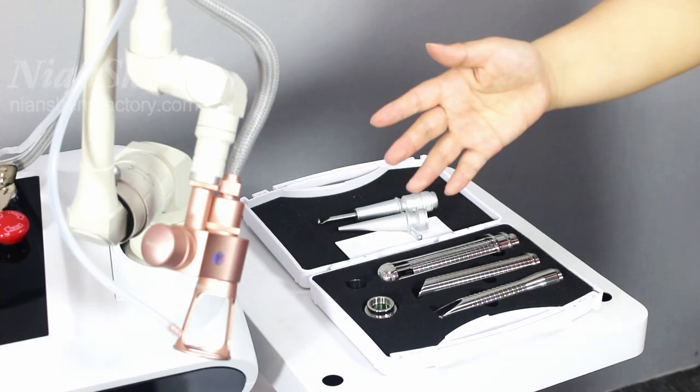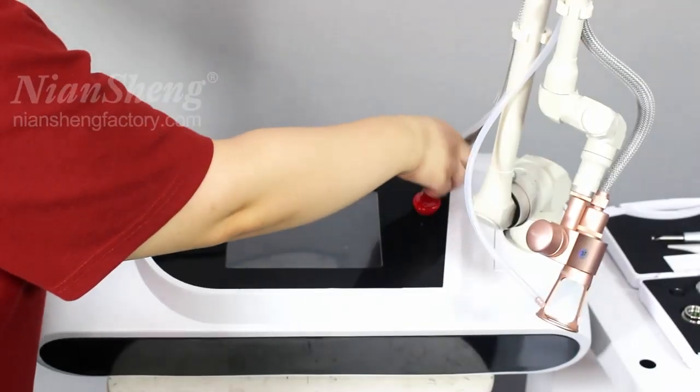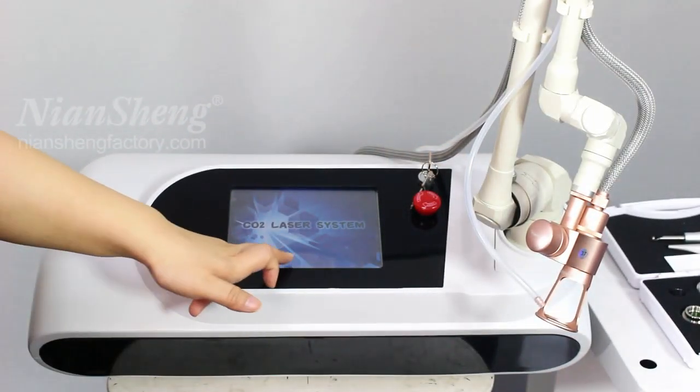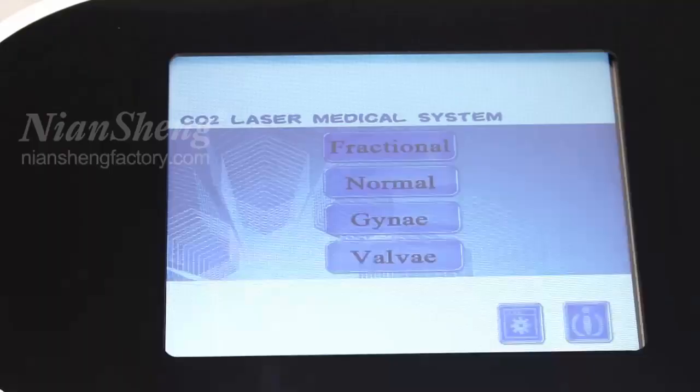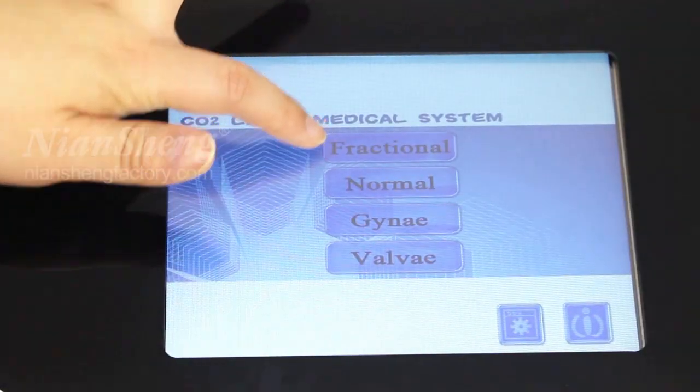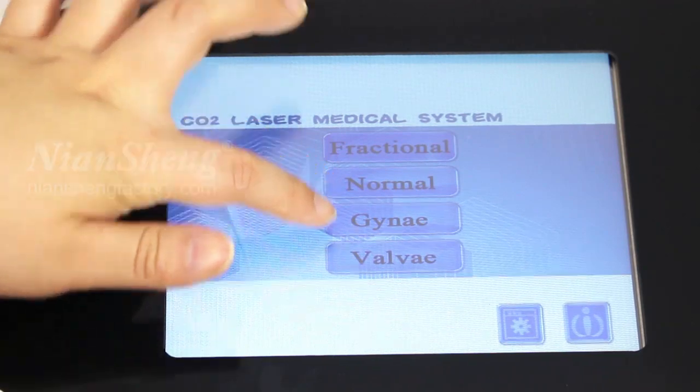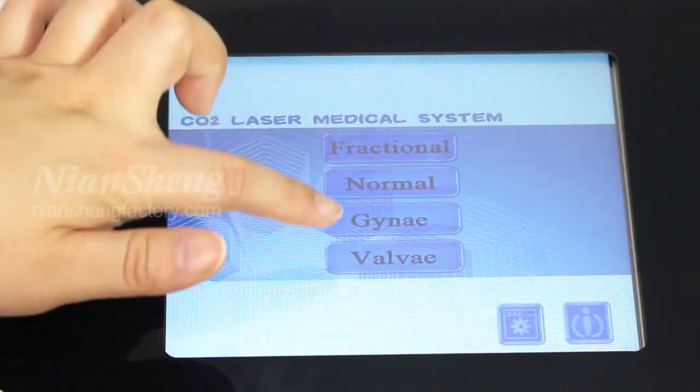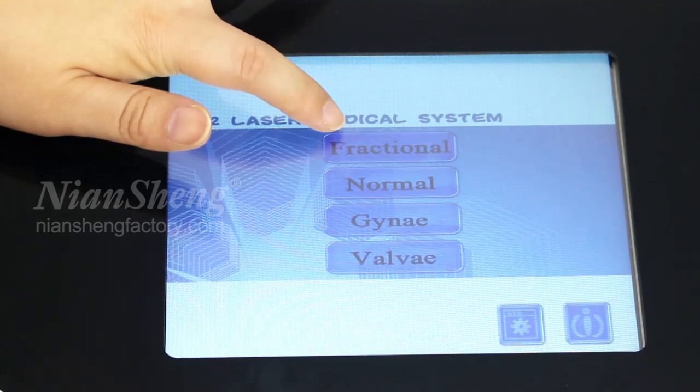The first one is the fractional. We turn on the power. And it has an interface CO2 laser system. The first one is the fractional mode, the second one is normal, and the third and fourth are for the fractional. We will try one by one.